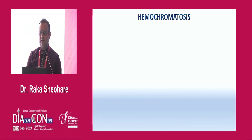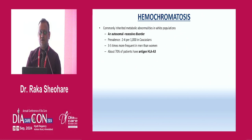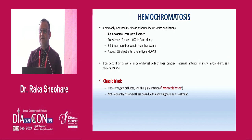Hemochromatosis — the last case was of RSSDI. It is an autosomal recessive disorder, and about 70% of patients carry HLA antigen HLA-A3. The classic triad is hepatomegaly, diabetes, and skin pigmentation — that's why it's called bronze diabetes.